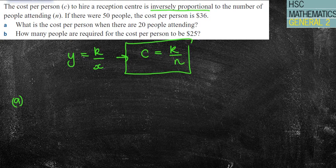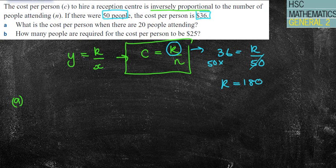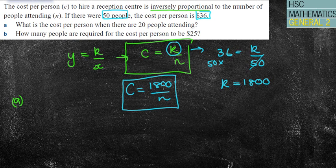Part A asks what is the cost per person when there are 20 people attending. We need to find the value of k. I've got 50 people and a cost of $36. So 36 equals k divided by 50. The opposite of divided by 50 is times by 50, so 36 times 50 gives me k equals 1800. Now I rewrite the equation: C equals 1800 over n.